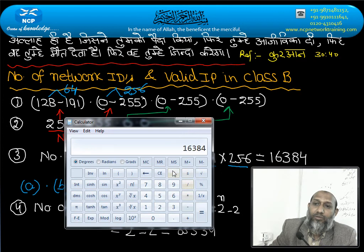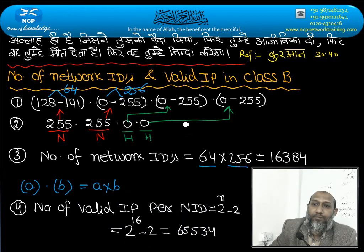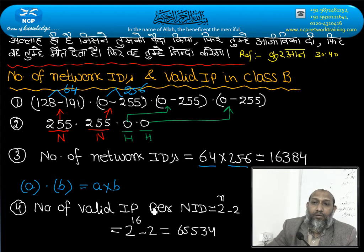2 power is 16. 2 power is 16. 65,536 minus 2. 65,534 will be. Is there any problem here?